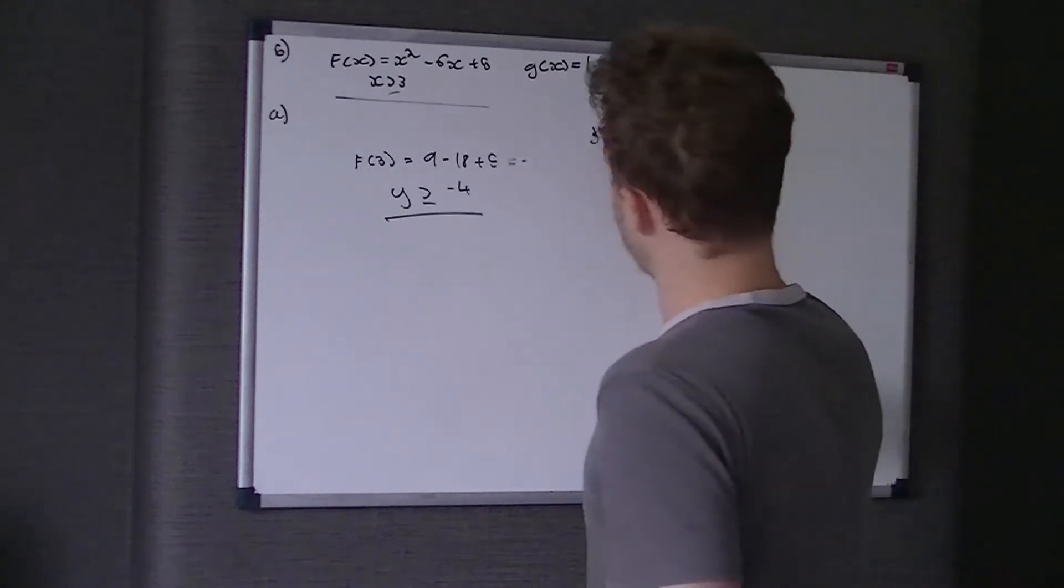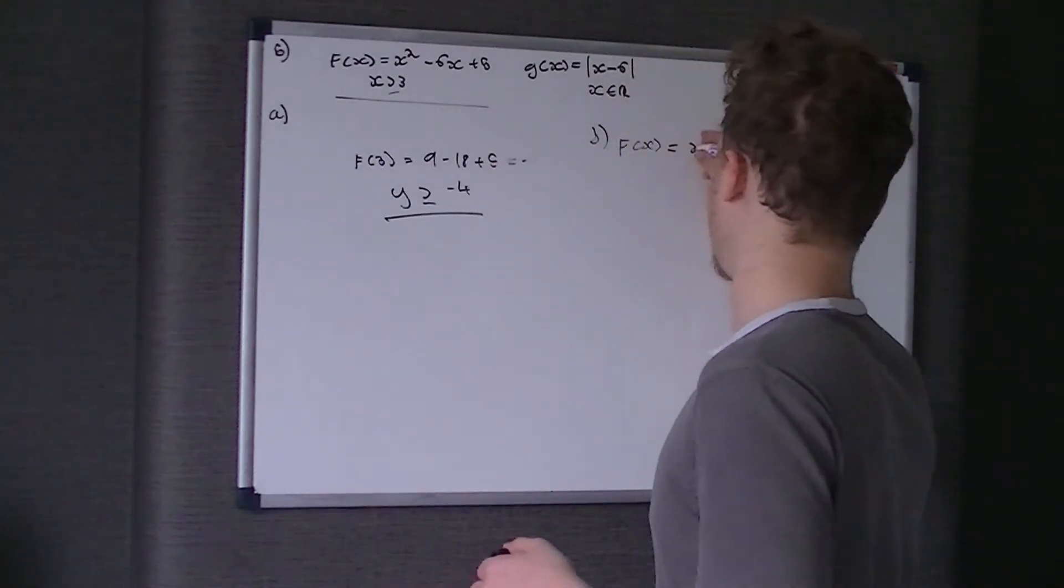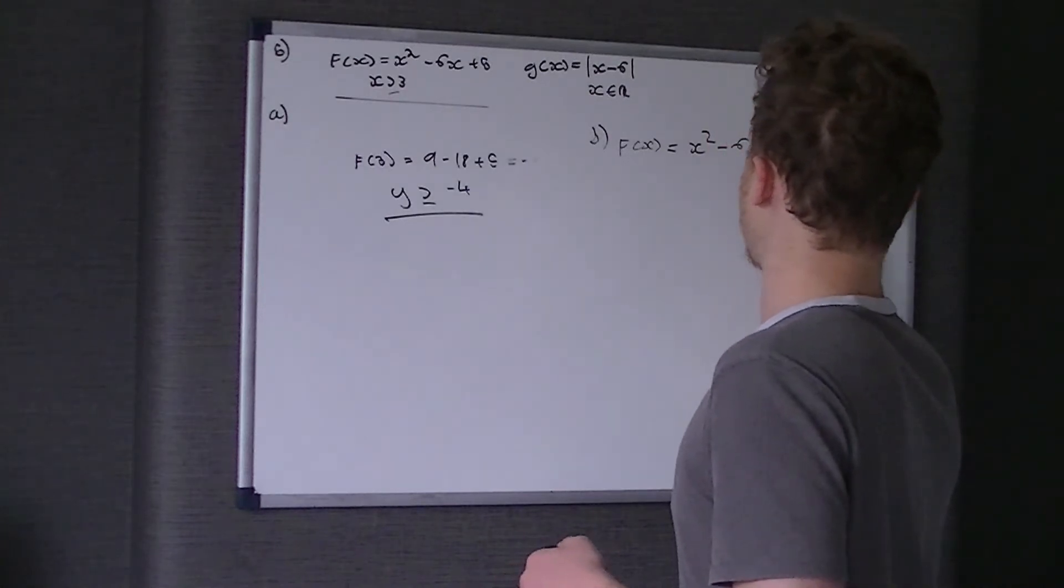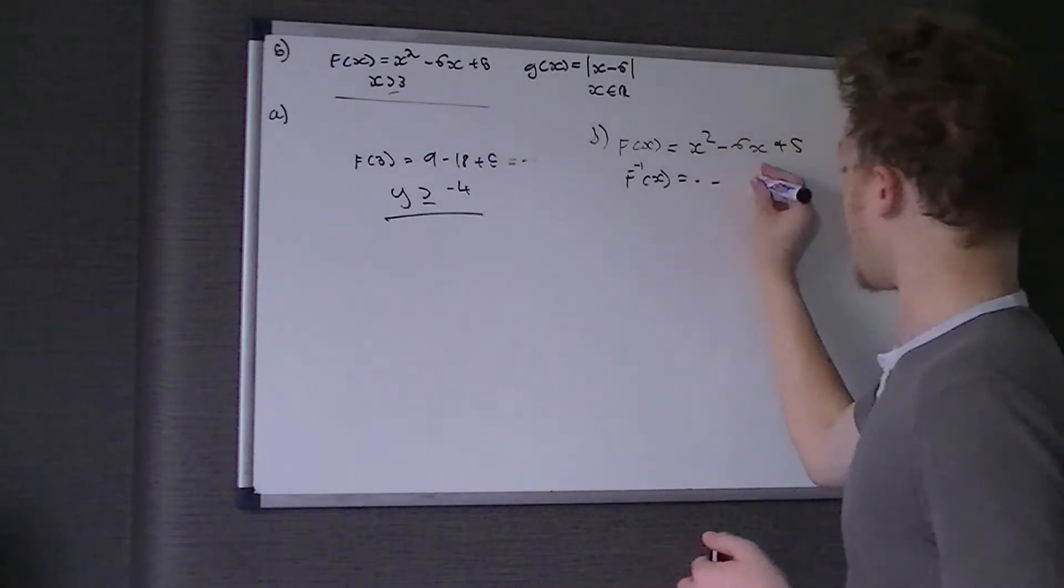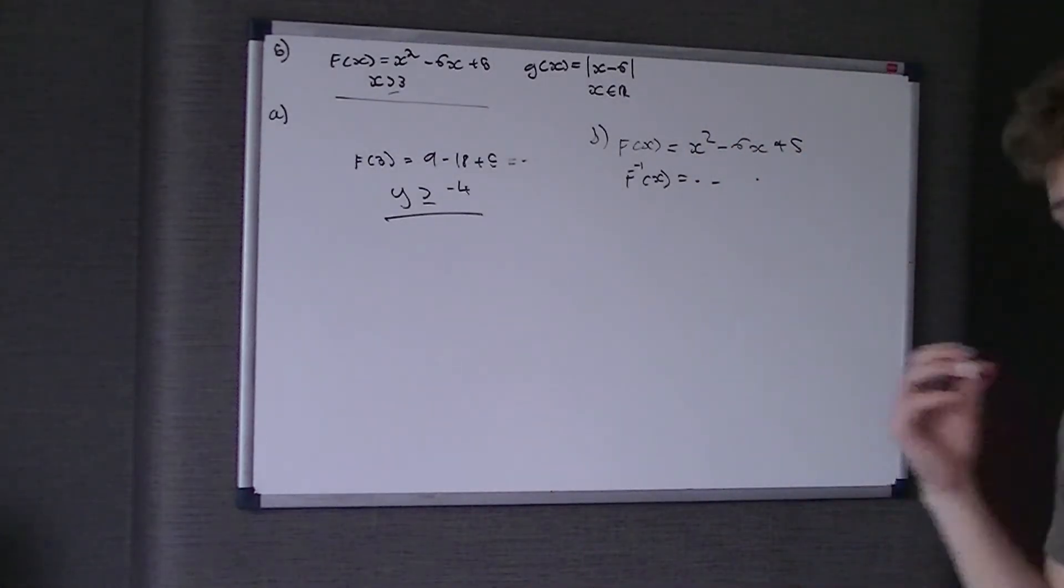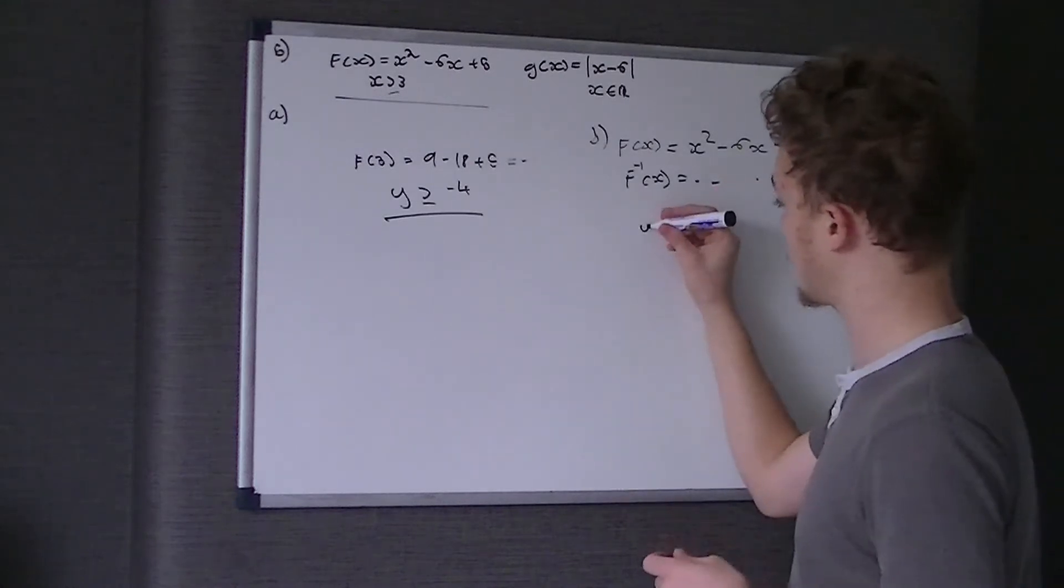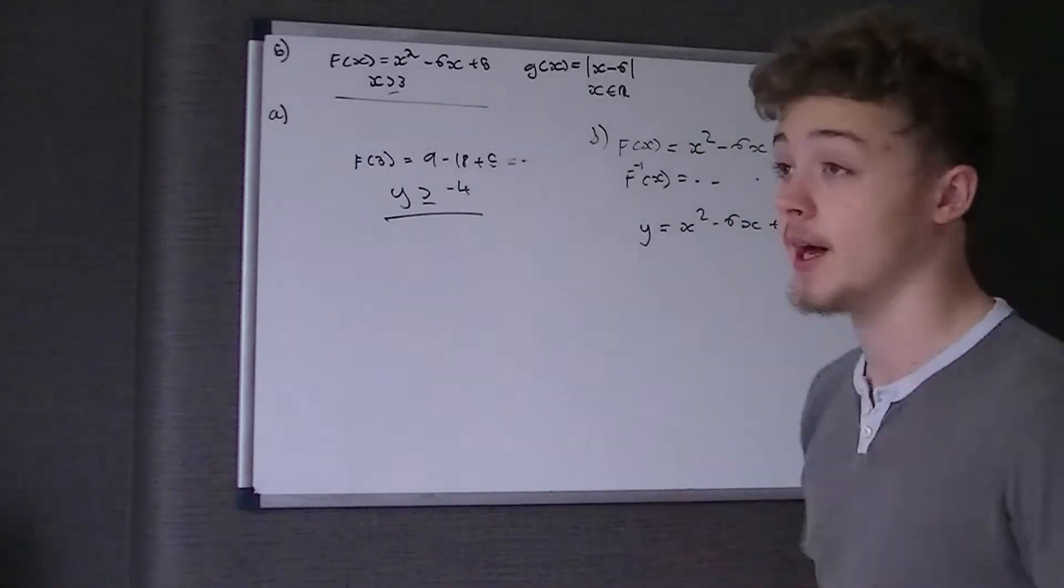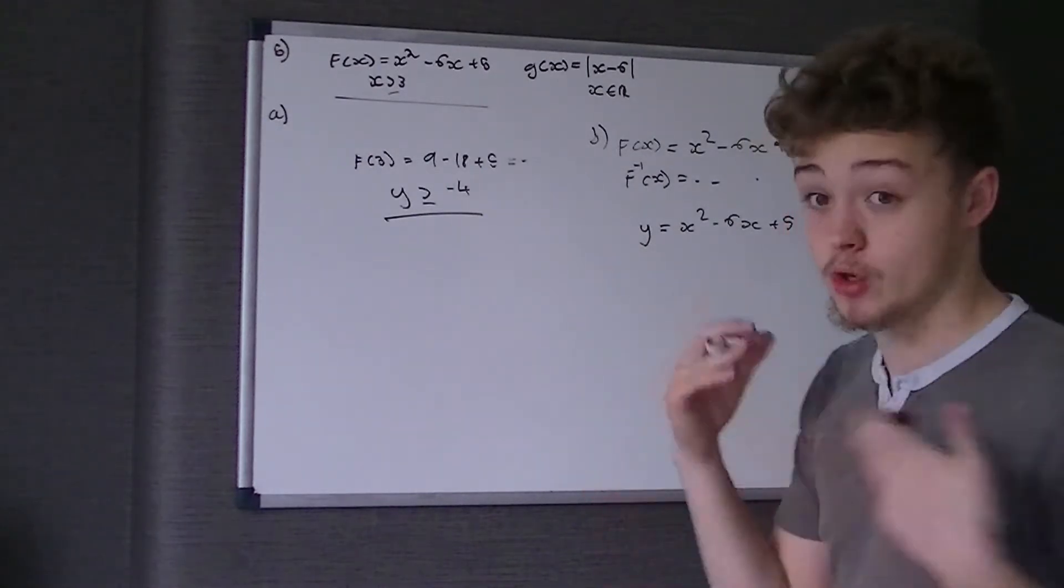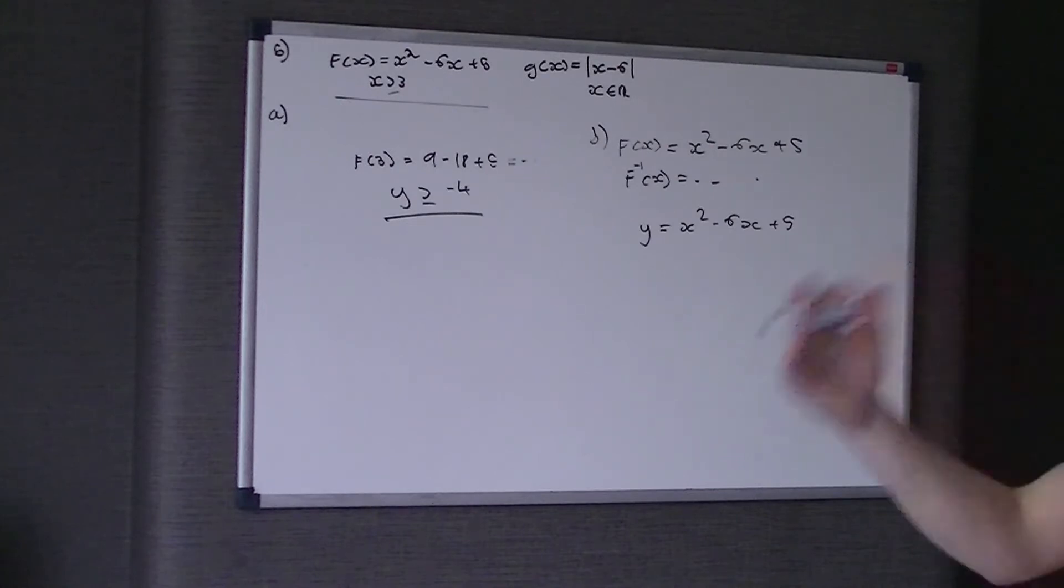The next part says we know f(x) equals x squared take 6x plus 5, and we want to know what the inverse function is, f to the minus 1 of x. Now the way of finding an inverse function is to rearrange a function to make x the subject, and then turning it back on its head. So basically what we're doing is rewrite f(x), so y equals x squared take 6x plus 5, make x the subject, and then when you've done that change the y's to x's and then that is your inverse function.